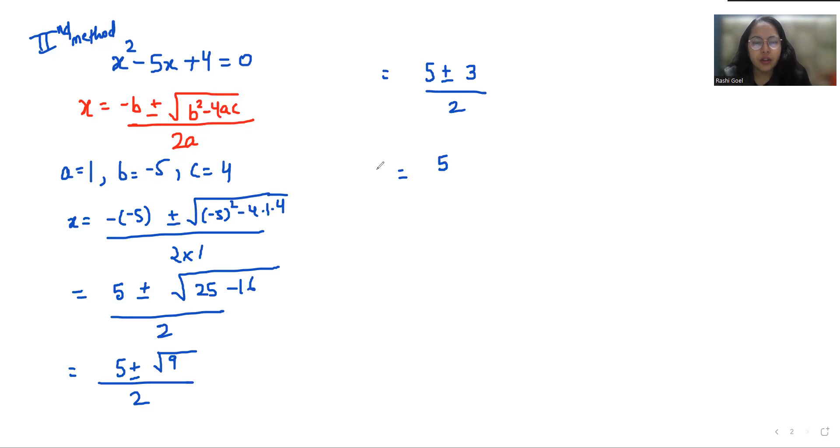So x1 is 5 plus 3 by 2 and x2 is 5 minus 3 by 2. 5 plus 3 is 8 by 2, that is 4.